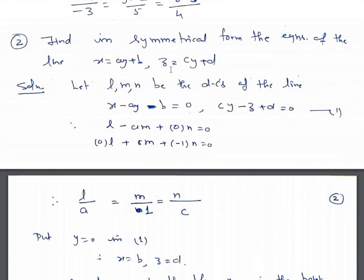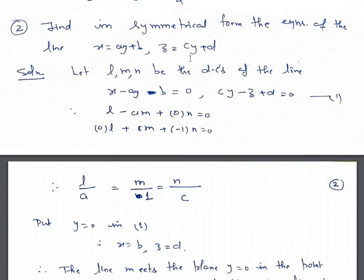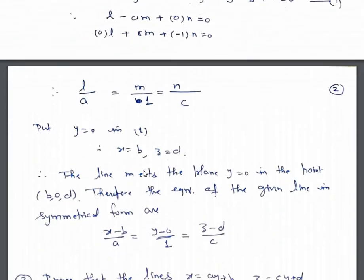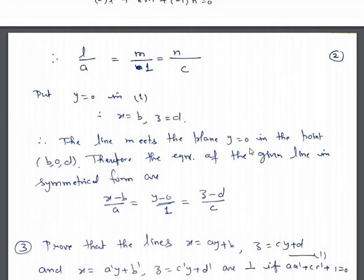To find a point on the line, put y equals 0. When y equals 0, we get x equals b and z equals d. So the line meets the plane y equals 0 at the point (b, 0, d). Direction ratios of the line are a, 1, and c. Therefore the equation of the given line in symmetrical form is: x minus b upon a equals y minus 0 upon 1 equals z minus d upon c.